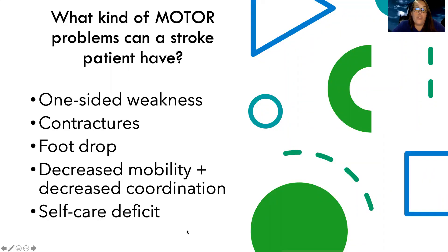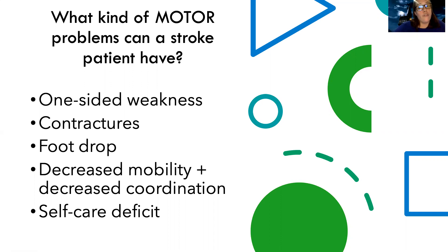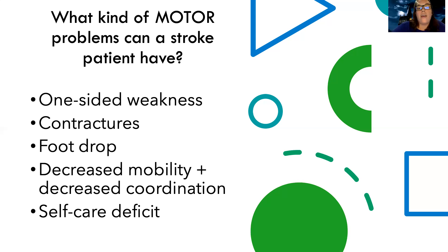So what kind of motor problems can a stroke patient have? They can have one-sided weakness, also known as hemiplegia. They can have contractures, where their limbs are stuck or fixed in a certain position from lack of range of motion. They can have foot drop, where because they're immobilized and due to neurological pathway changes, they lose the ability to hold their foot upright — it just stays stuck in a drop position. They can also have generally decreased mobility, decreased coordination, and a self-care deficit — meaning they can't take care of themselves the way they used to.